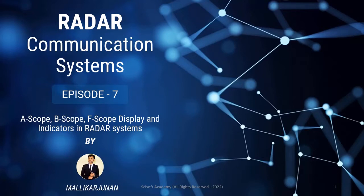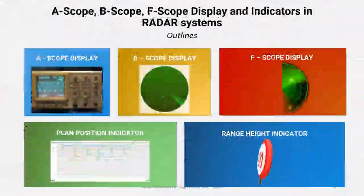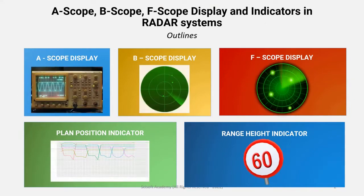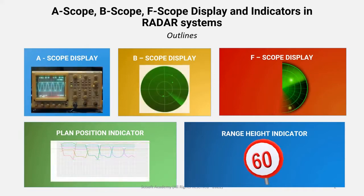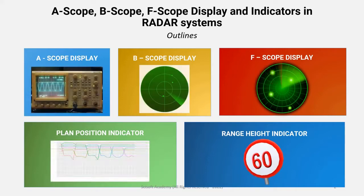Now we will talk about different kinds of displays in radar systems and different kinds of indicators in radar systems. What are the indicators and different kinds of displays in radar systems? The course outlines are: first, different kinds of displays — A scope, B scope, and F scope display. We will also talk about the plan position indicator and range height indicator.